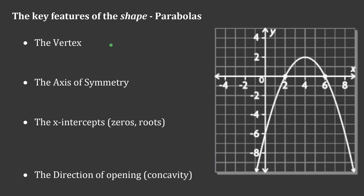When we have a parabola, we have something called a vertex. Thinking back to triangles, those have vertices — well, we have a single vertex for our parabola. I'll highlight that in purple. That vertex is a very important point because the rest of the parabola grows downward or upward from that point. For this particular one, my vertex is at the point four, two.